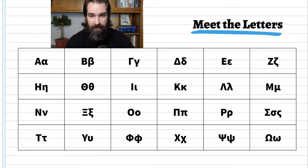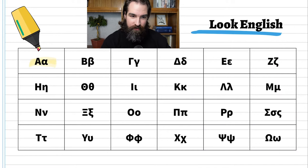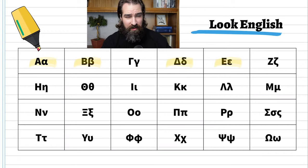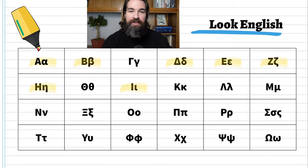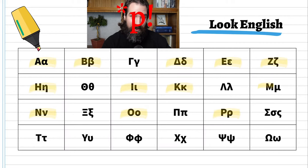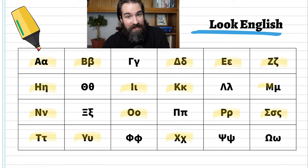A lot of them look English. The first one looks like an A, then something like a B, the fourth looks like a D especially in lowercase, something like an E, something like a Z, something like an H paired with a lowercase n with a tail, something like an I, a K, an M, an N paired with a V, an O, an R, an S, a T, a Y paired with a U, an X, and at the very end something like a lowercase w.